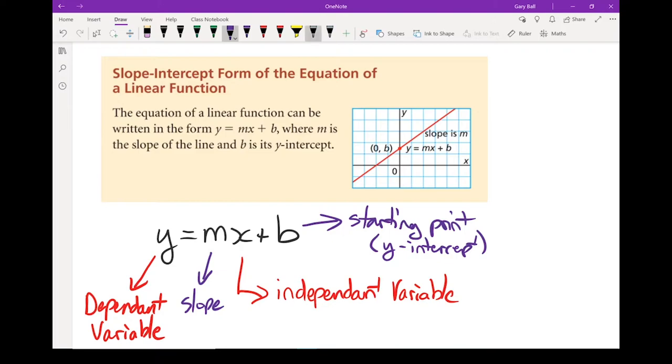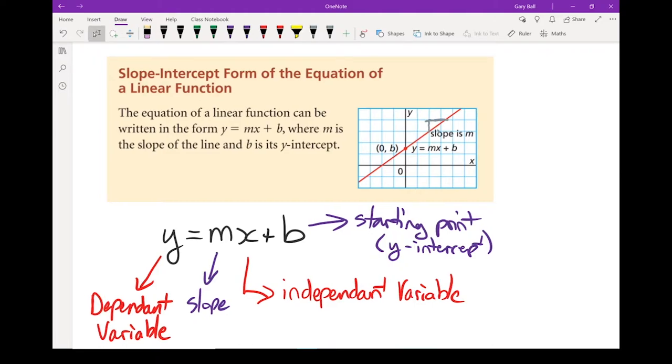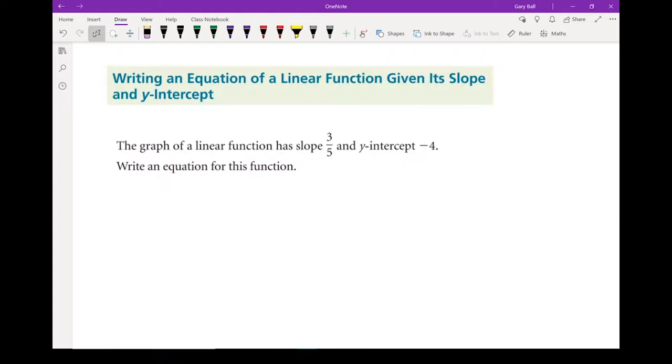We can look at this graph up here, and we can see all of these things. Our slope, remember you can draw that triangle to get your slope. And our y-intercept is this point right here where it crosses the y-axis. And here we're given the parts of the equation that we need, and they're asked to write the equation for it.